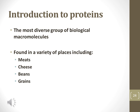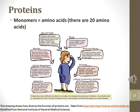Proteins serve many functions in the body and are the most diverse group of organic macromolecules. Proteins can be obtained in a diet through meats, cheese, beans, and grains. Proteins are chains of 20 different types of monomers called amino acids. This drawing shows some of the different functions of proteins such as muscle contraction, immune responses, and enzymatic reaction.